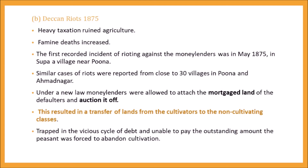Deccan Riots, 1875. Heavy taxation affected agriculture and famine deaths increased due to scarcity of food. The riot was mainly directed against moneylenders. The first riot took place in May 1875 in Supa village near Pune, and similar riots also took place in around 300 villages from Pune to Ahmednagar.